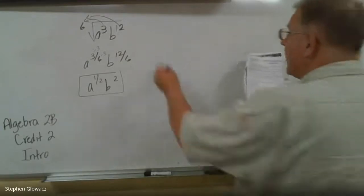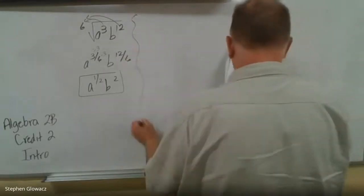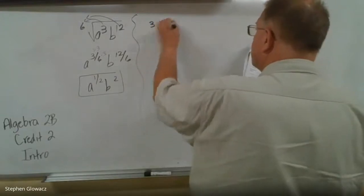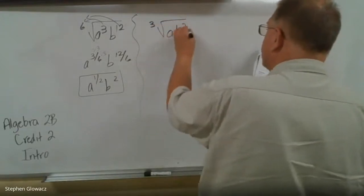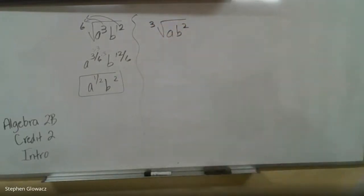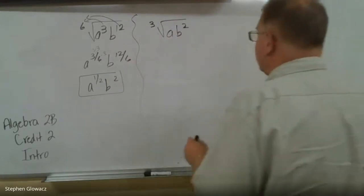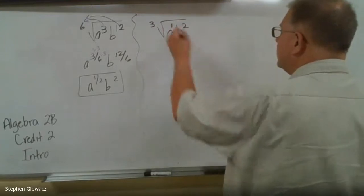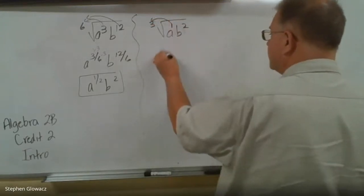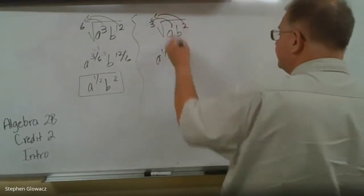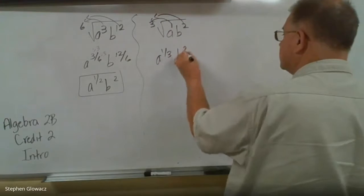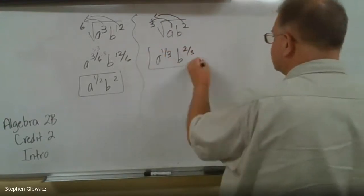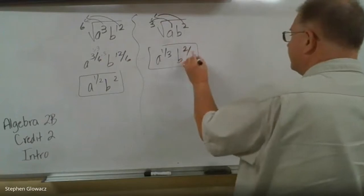Number 5 is the 3rd root of a, b squared. When there's no exponent on a variable, we put in the 1. So it's a to the 1 over 3, and then b to the 2 over 3. Since neither of those fractions can be reduced, we're done — a to the 1 third, b to the 2 thirds.